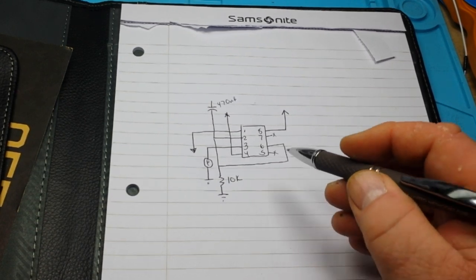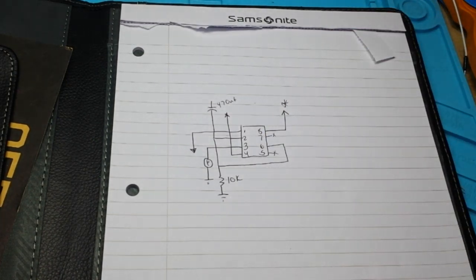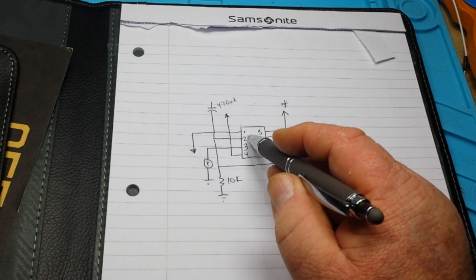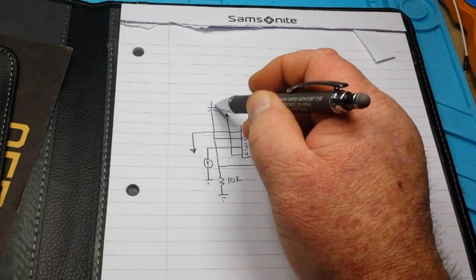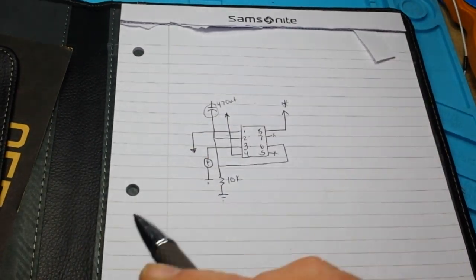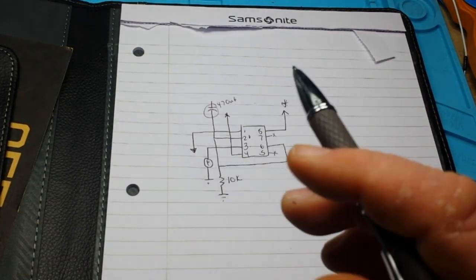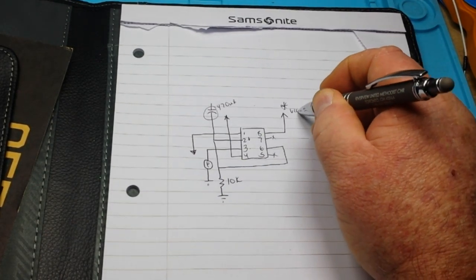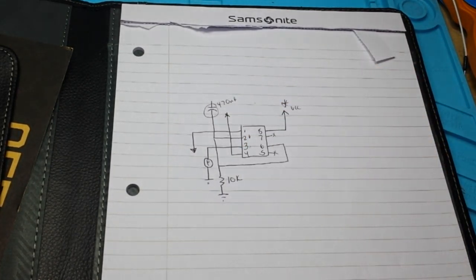So the way this works is once we apply power to our circuit, pin 2 starts out high, pin 3 starts out low. Once this capacitor here charges, the voltage on pin 2 starts to decrease. And once it gets below one-third of our VCC, it goes low. Pin 3 goes high. The light turns on. This is a mono-stable setup of the 555 timer. Super easy to do.